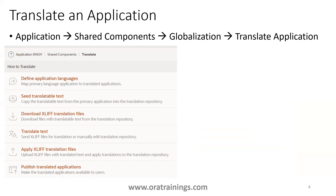The first thing to do is define an application language. Why do we use a translation approach? Let's say you have an Oracle Apex application designed by default in English, and you want to show the column names in Hindi, or maybe French or Swedish. The first step is to click on 'define application language' and mention which destination language you want — for example, I want to translate my application to Hindi.